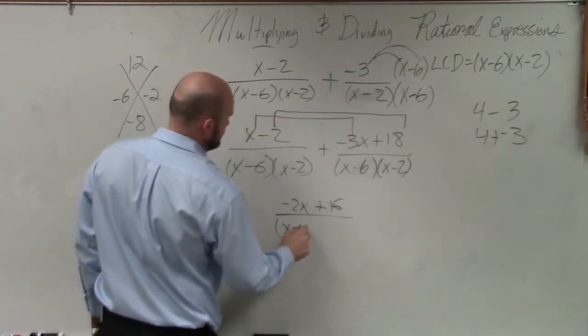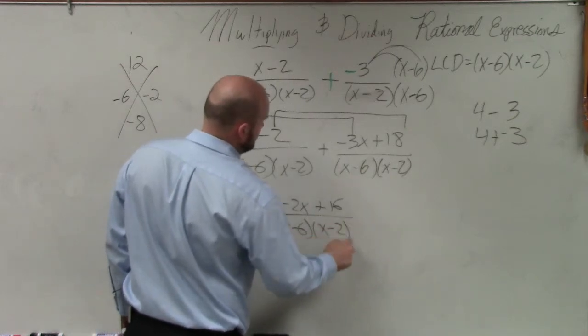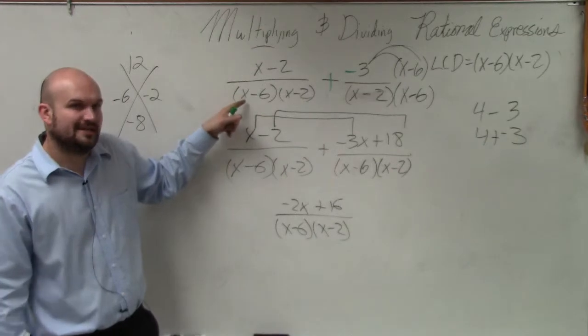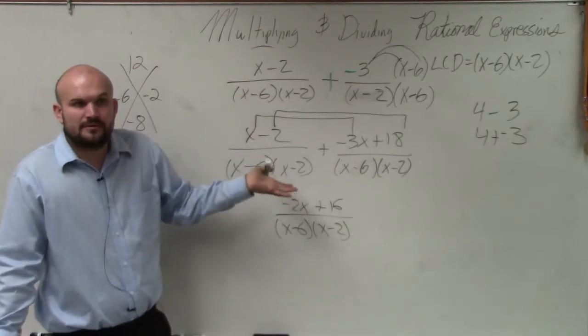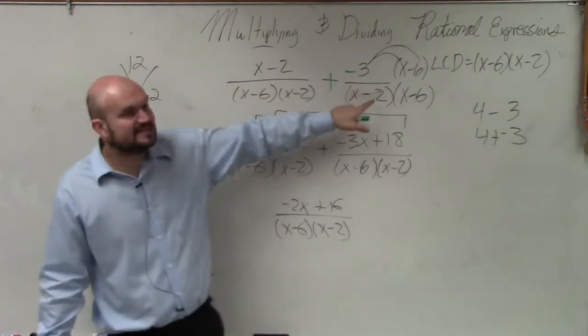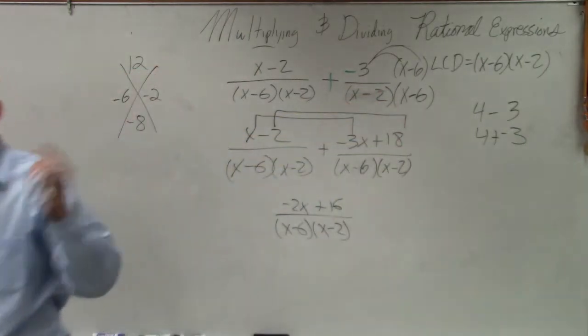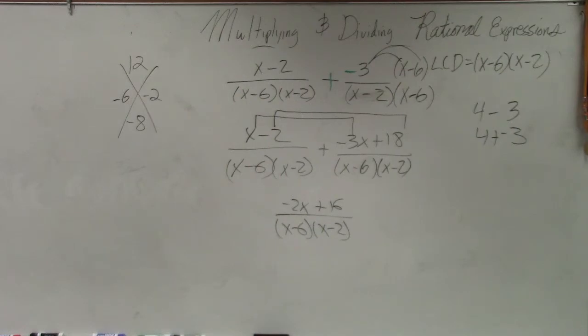Would I not multiply the other side? You don't have to, because the other side is already the LCD. So we don't have to do anything to it. It's already the LCD. The only side that didn't have the LCD was x minus 2. So I had to multiply it by x minus 6 so it would get to be the LCD. Does that make sense?